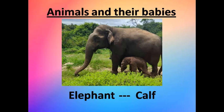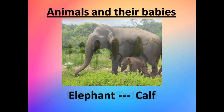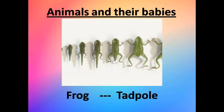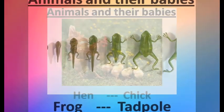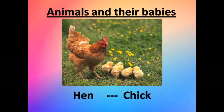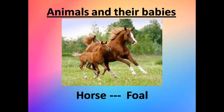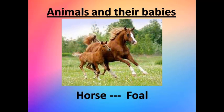Elephant's baby is also called Calf, C-A-L-F. Next is Frog — frog's baby is called Tadpole, T-A-D-P-O-L-E. Our next is Hen — hen's baby is called Chick, C-H-I-C-K. Horse — horse's baby is called Foal, F-O-A-L.